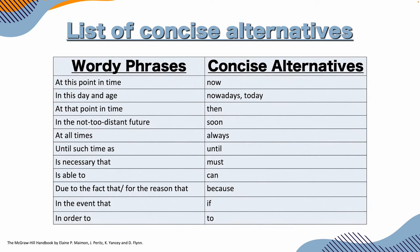So the concise version would be: 'Because I have now driven my car more than 3,000 miles, I should schedule an oil change soon.' You can see that I replaced 'in the not too distant future' with 'soon,' and we don't need the phrase 'for the purpose of' in that sentence. So, list of concise alternatives: 'at this point in time' → now; 'in this day and age' → nowadays/today; 'in the not too distant future' → soon; 'at all times' → always; 'until such time as' → until; 'is necessary that' → must; 'is able to' → can; 'due to the fact that / for the reason that' → because; 'in the event that' → if; 'in order to' → to. Why would you write all those words if we have one alternative? There's no need.